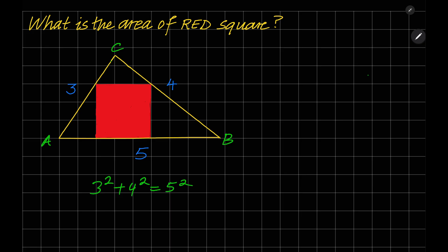Therefore ABC is a right triangle. The points are A, B, and C, and the other points are D, E, F, and G. Triangle DCE is similar to triangle ABC, and all triangles in this figure are similar. Therefore the side lengths are proportional to each other. Let's say DC is 3K.